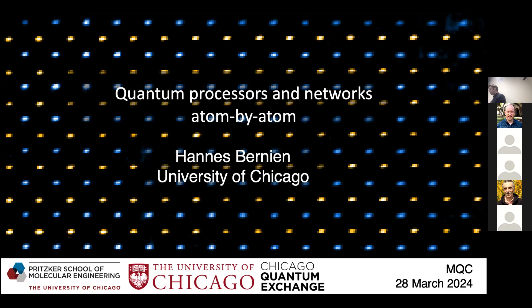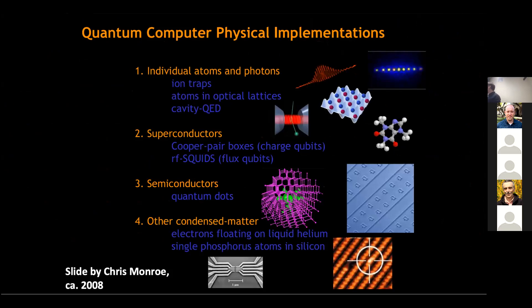I'd like to zoom out with this historical slide from Chris Monroe. I saw this talk around 2010 at the beginning of my PhD — it was hugely motivating and made me enthusiastic about quantum information and quantum computing. In this talk, he compares different systems for realizing a quantum computer. Already at that time, people were thinking about individual atoms, photons, and ion traps. Solid-state systems like superconductors were also considered — already by 2008 it was clear these were promising systems for qubits.